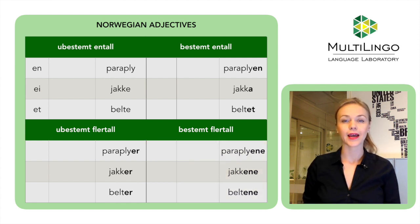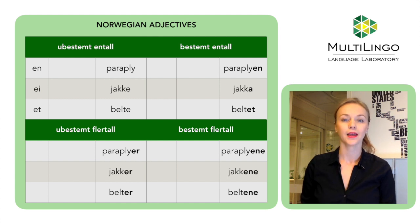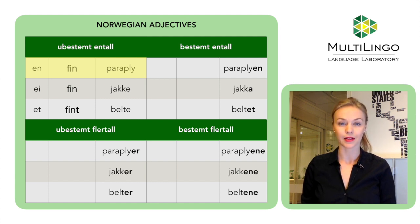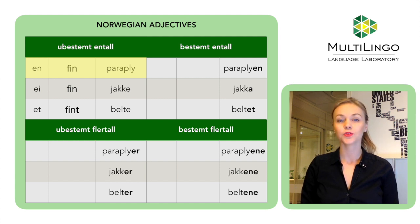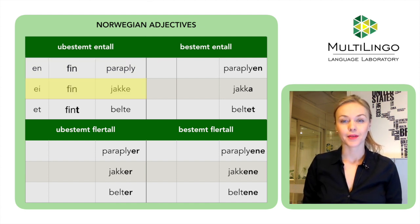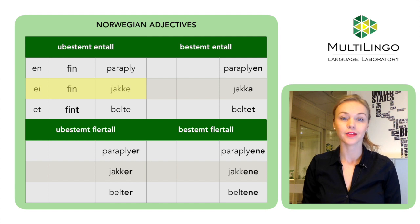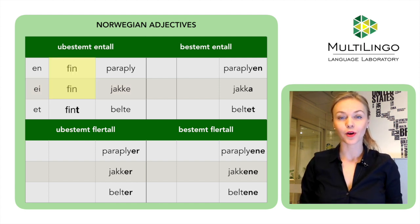But now, if I want to say 'a nice umbrella' in Norwegian, I will have to put an adjective between the indefinite article 'en' and the noun itself. So that would be 'en fin paraply' — a nice umbrella. 'Fin' is just the basic form of the adjective which you'll find in the dictionary. When you describe a masculine or feminine singular noun in indefinite form, you do not change the form of the adjective. En fin paraply, en fin jakke — a nice jacket.